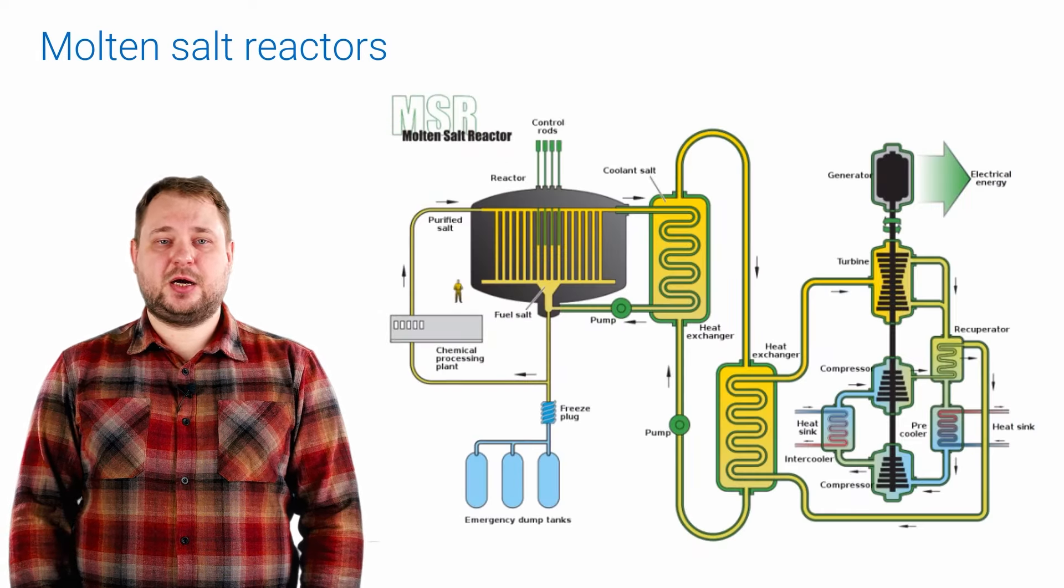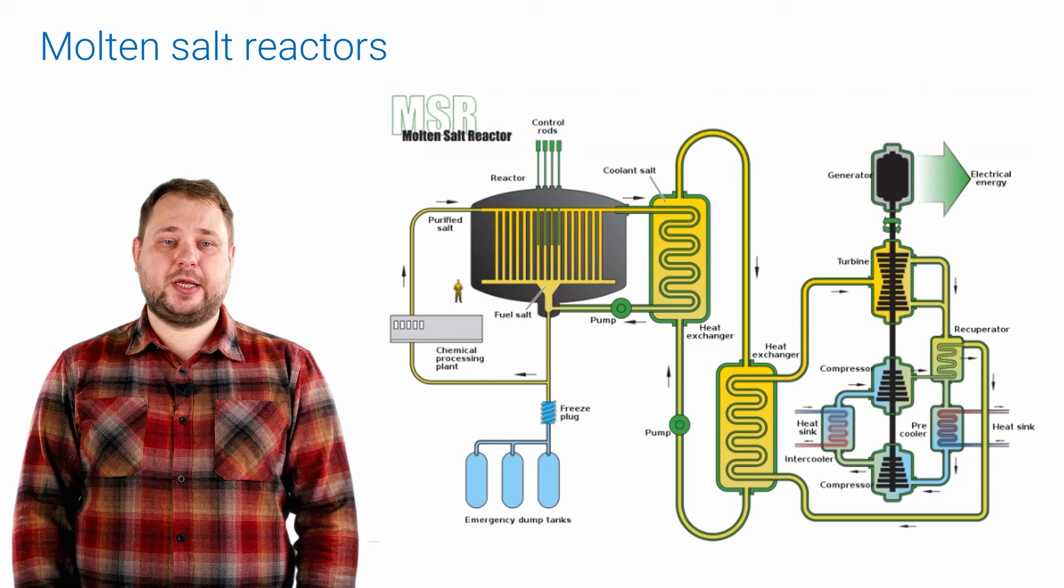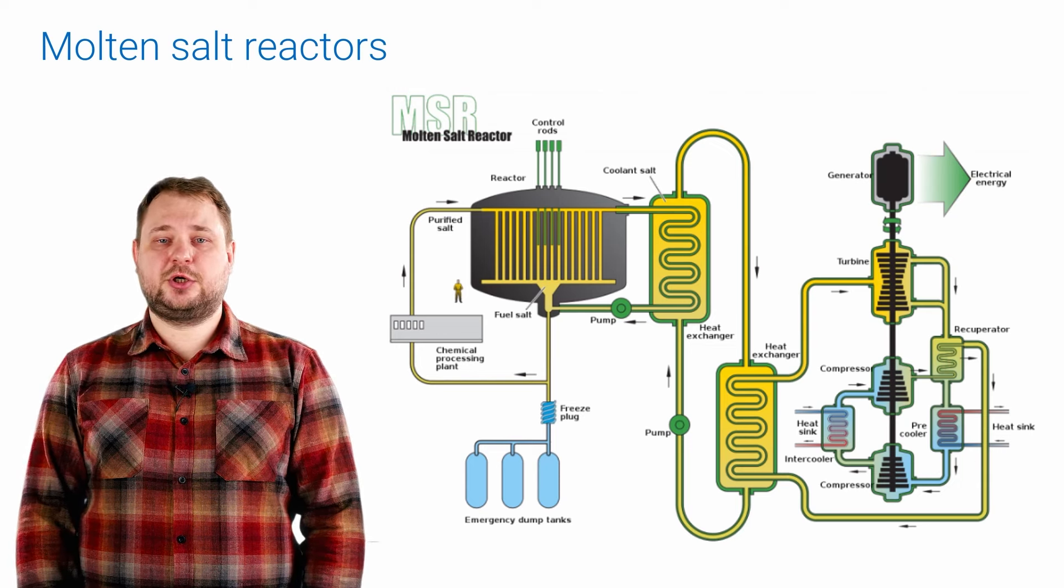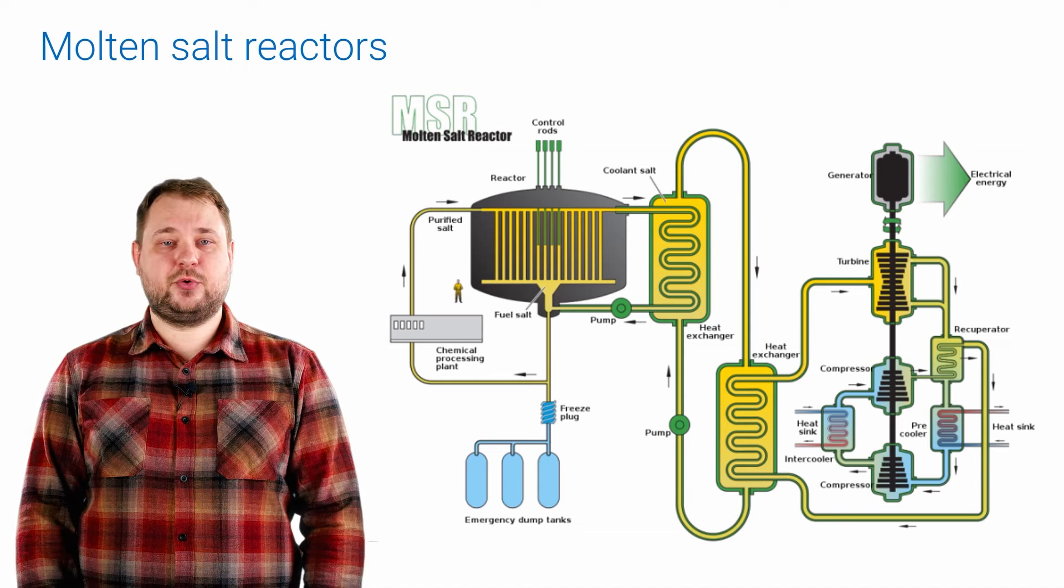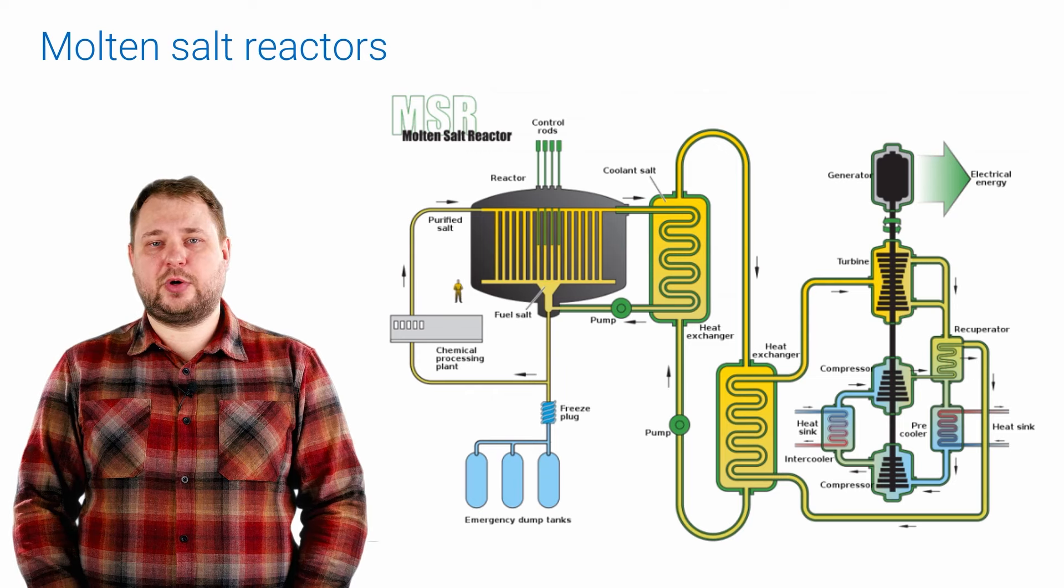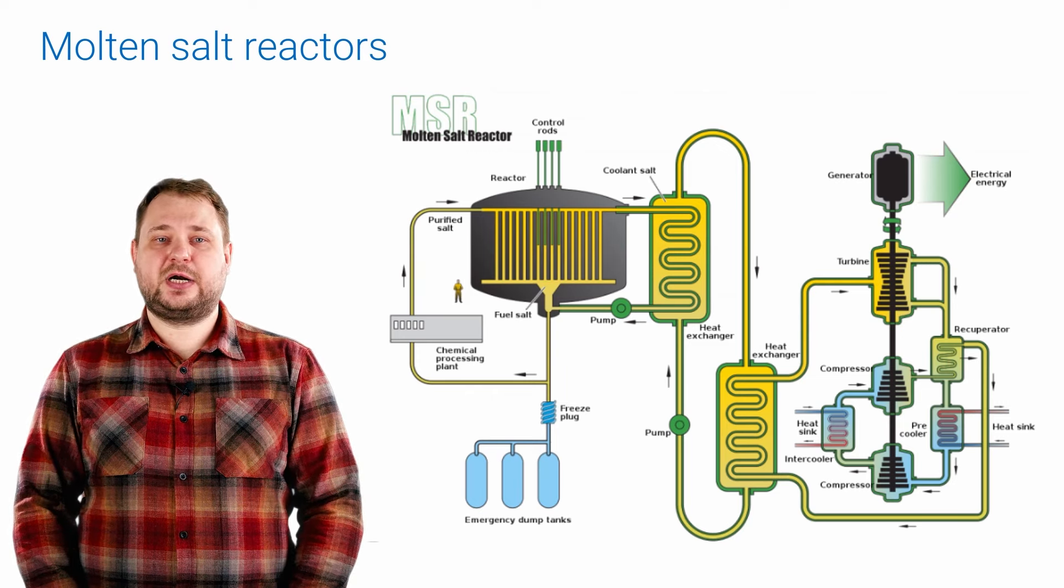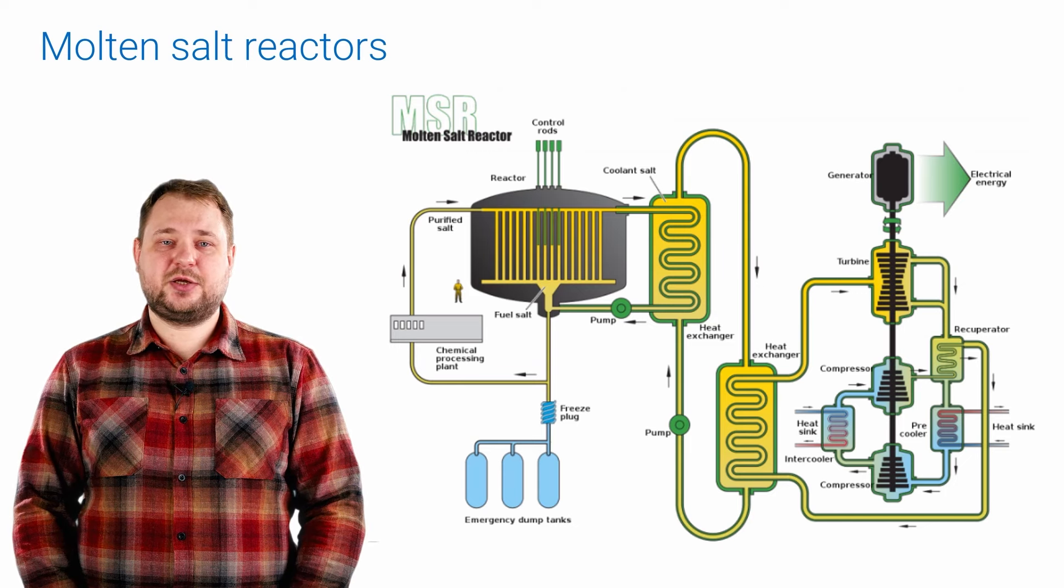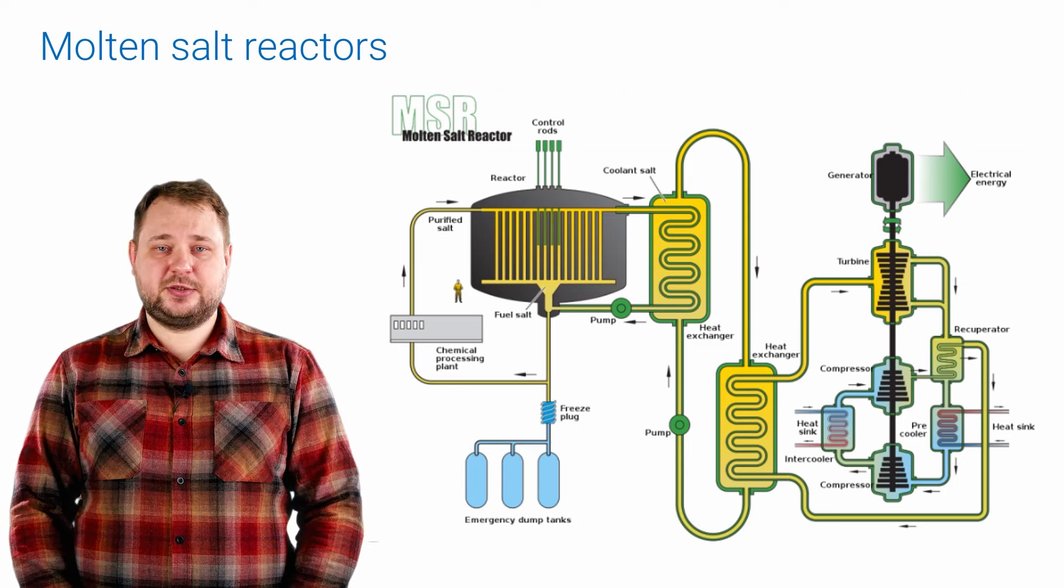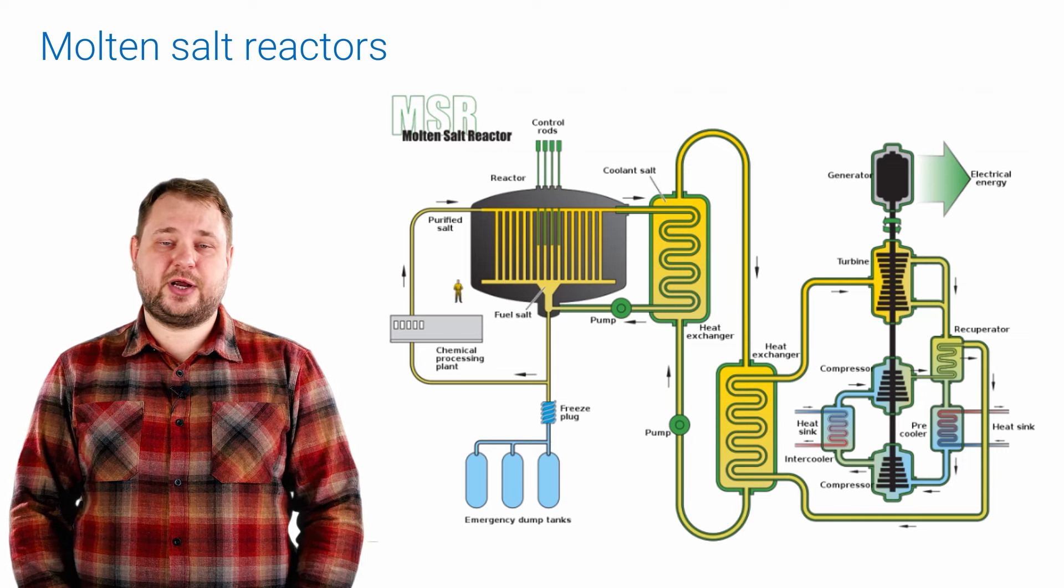A molten salt reactor is a type of low-pressure nuclear reactor in which molten salt serves as both coolant and fuel. Before being formed into rods, pellets, or pebbles, the fuel is mixed with a fluoride salt, which is passed through graphite or a similar moderator that generates slow neutrons and controls the reaction.